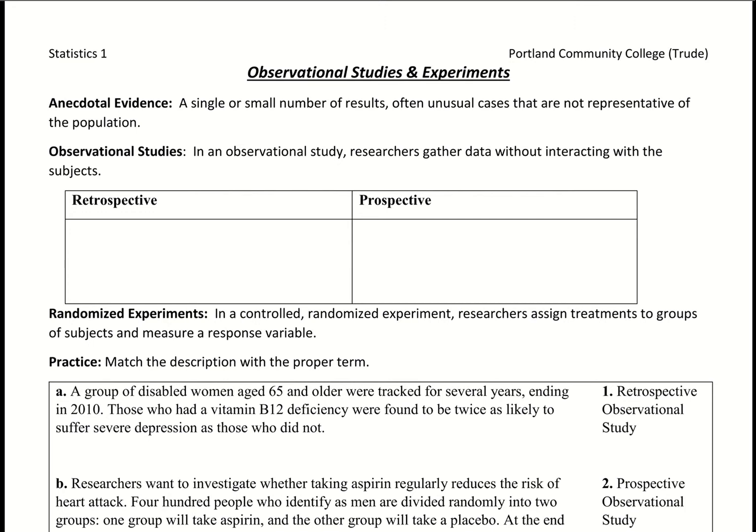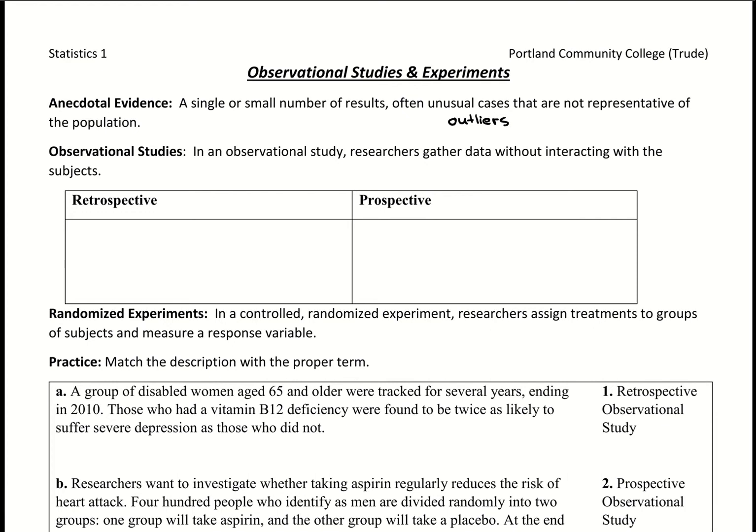One sort of observational study is called anecdotal evidence. It's from a single or small number of results, often unusual cases — these are usually outliers. An anecdote is something that someone tells you, like a friend telling you that they've been taking fish oil and now they can run faster. It's awesome if that's working for them, but it would be better to hear it from an actual study with a larger sample size.